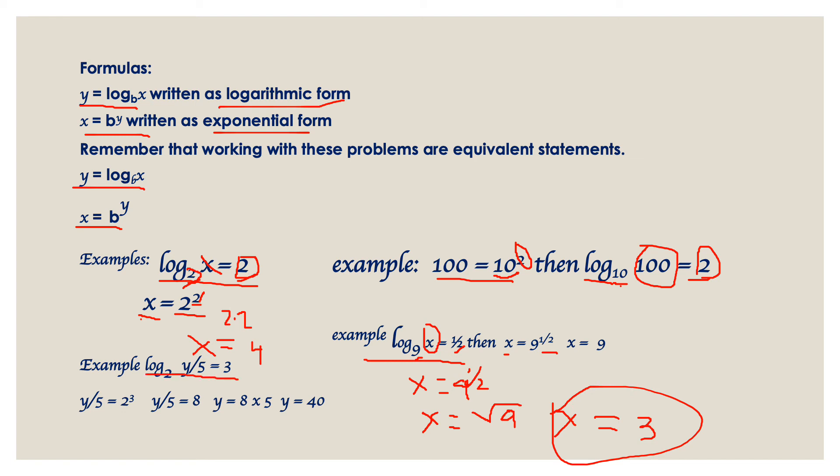Example number 4. We are going to find the value of y. This is logarithmic form and we have to inverse this to exponential form. So y over 5. Make sure you find your base and your exponent here to make it look like exponential form.